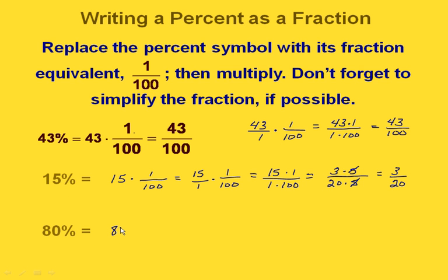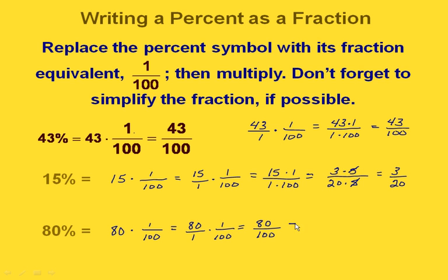One last one. If we have 80%, we write this as 80 over 1 so that we can do our multiplication. That's going to give us 80 times 1 over 1 times 100. Now both 80 and 100 are divisible by 10, so if we divide both by 10 we'd have 8 tenths. We can still simplify because 8 is 4 times 2 and 10 is 5 times 2, so we cancel out a 2 and that gets us down to 4 fifths.